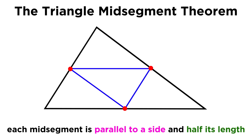Furthermore, the triangle mid-segment theorem states that any mid-segment of a triangle is parallel to one of the sides of the triangle, and is also precisely half the length of that side. So here we can see one mid-segment and the side of the triangle that it is parallel to.